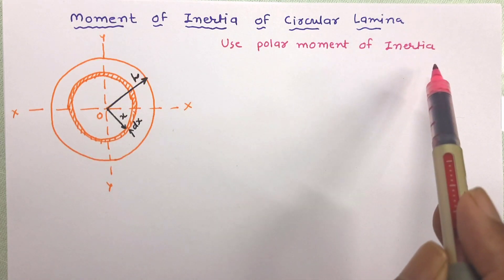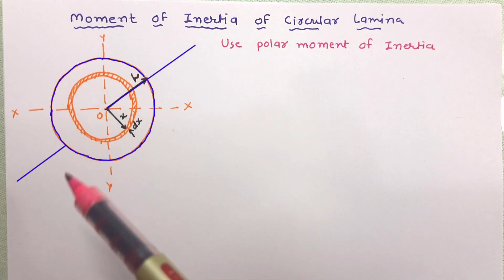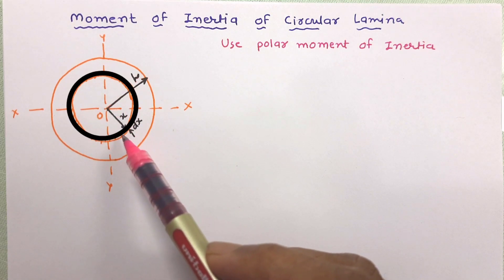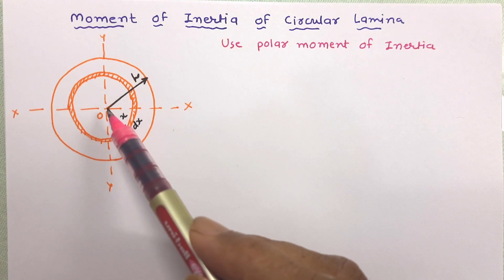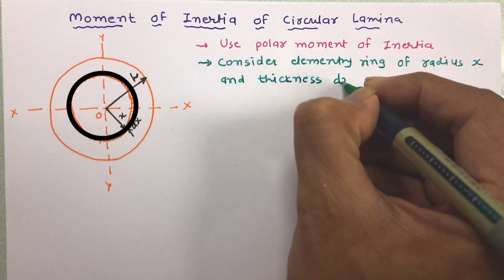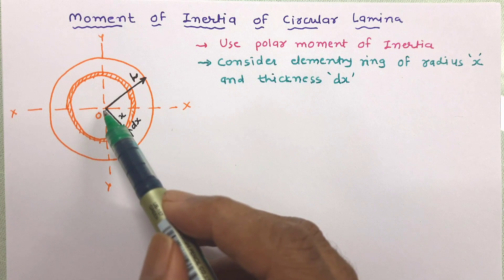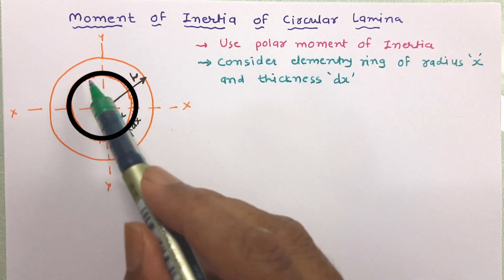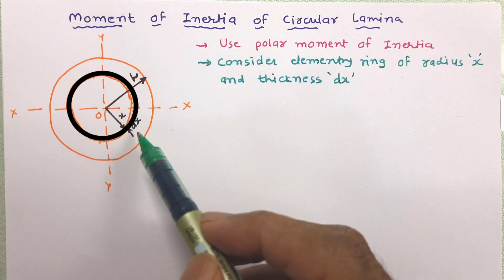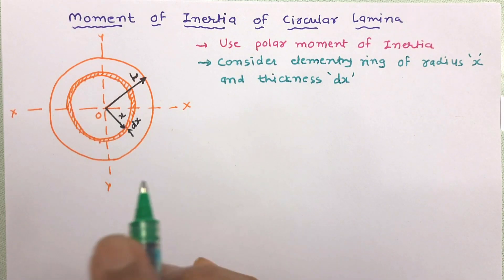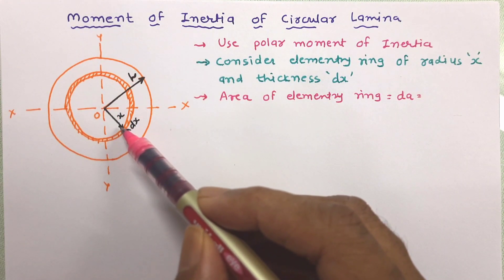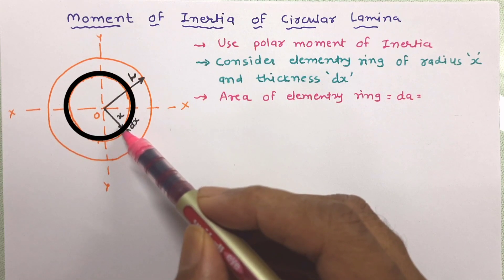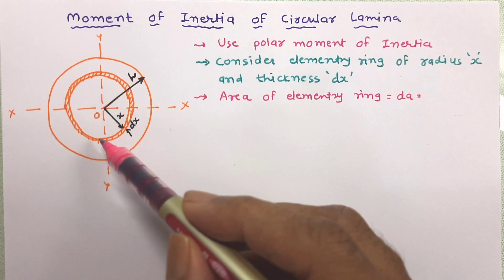To find the polar moment of inertia for the circular lamina, consider a thin elementary strip of thickness dx at distance x from the center of the lamina. This elementary ring has radius x and thickness dx. The circumference of this elementary ring is 2πx.